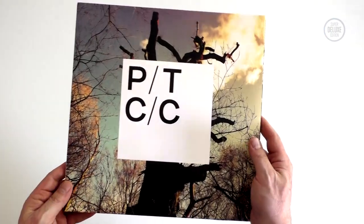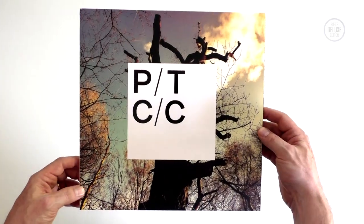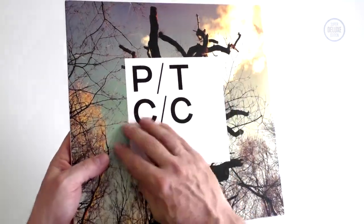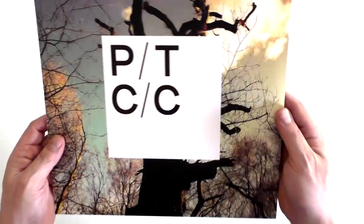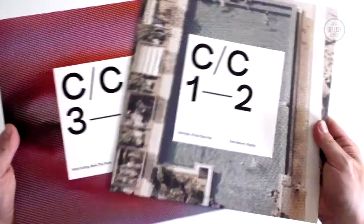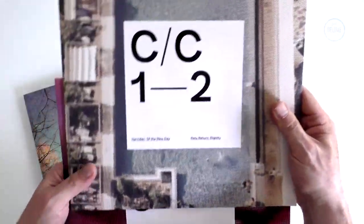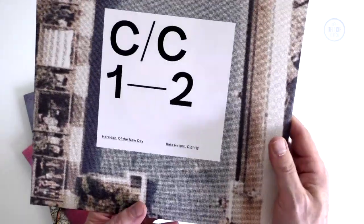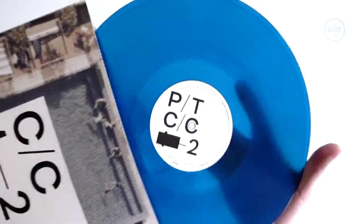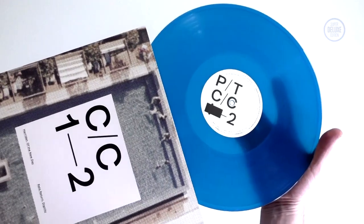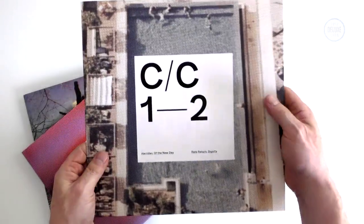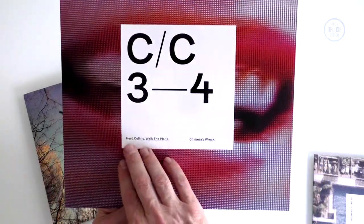Let's take a look at some of the other editions. First of all, this is the 2 LP set on transparent blue vinyl. Again, very nicely presented with the spot varnishing. It's not a gatefold, it's a wide spine sleeve so the two inner sleeves come out. These are numbered one, two, sides one, two, three, four. This is a 33 RPM pressing. Side one you get Harridan and Of the New Day. Side two you get Rats Return and Dignity. There's the very nice transparent blue vinyl. Even though these are inner sleeves, you're still getting spot varnishing.